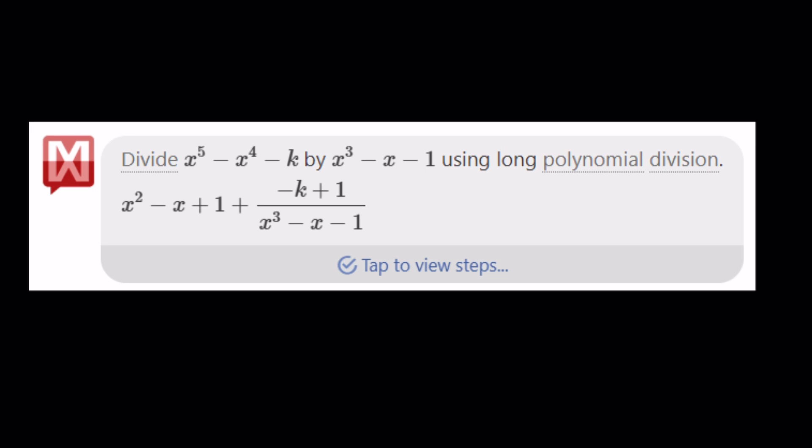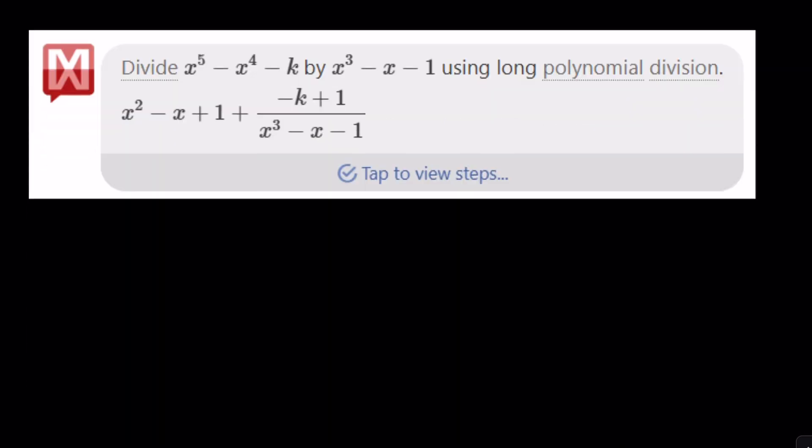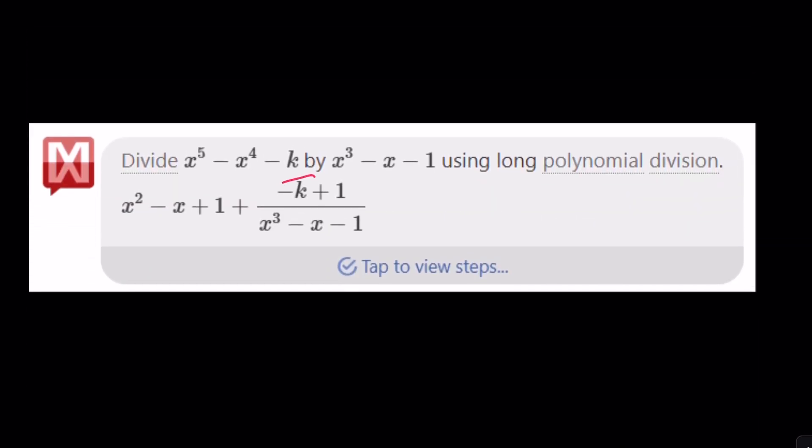Notice that if you do polynomial division with a computer, of course, or a calculator, this becomes the remainder. But the remainder is supposed to be zero, which means k equals one. Thank you for listening. Have a good one. Bye-bye.